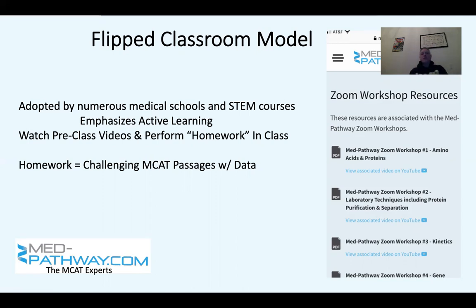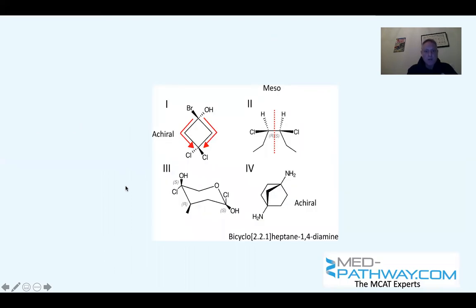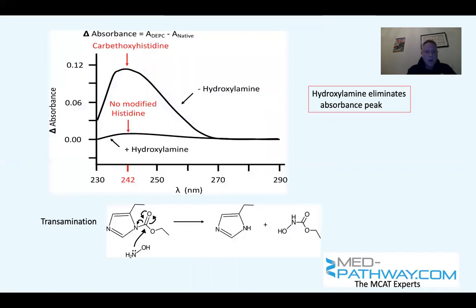You come to class and we challenge you with MCAT passages that are all data analysis driven. We annotate all those and show you how to actually interpret data. We look at complex organic molecules, ask about meso and chirality. We look at physical chemistry and spectroscopy. We take complicated graphs like this and break them down so you can read them and apply them to organic chemistry reactions relevant to the passage.